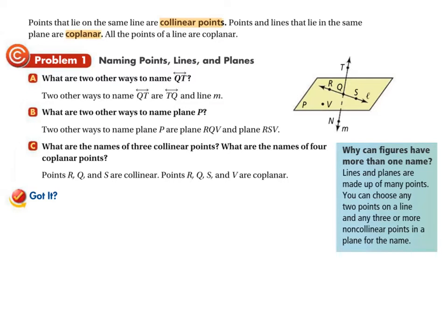Points that lie on the same line are called collinear points. If you have two points, they obviously fall on a line because you can connect them. But does a third point also fall on that line? A point not on that line is not collinear with the other two. A point that does fall on the same line is collinear — if you connected two of the points you'd pass through the third. So those three points are collinear, whereas the off-line point is not.